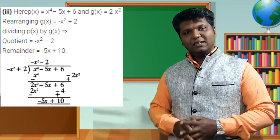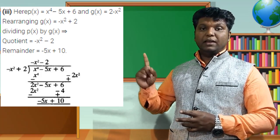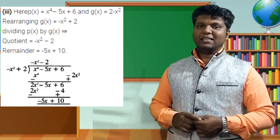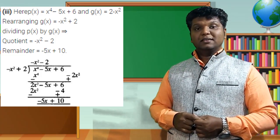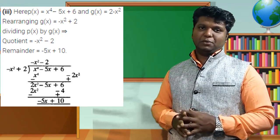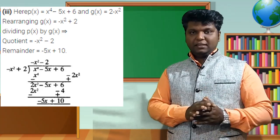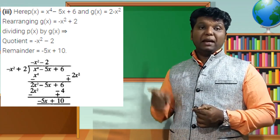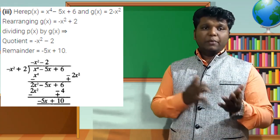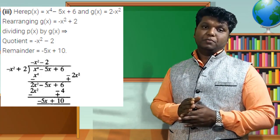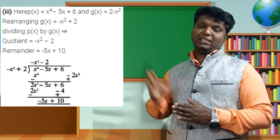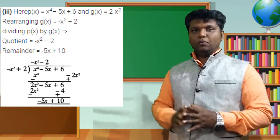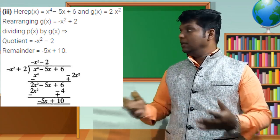Start dividing: x⁴ ÷ (−x²) = −x². Place −x² in the quotient. Multiply −x² by the divisor: −x² × (−x²) = +x⁴, −x² × 0x = 0x³, −x² × 2 = −2x². Subtract: x⁴ − x⁴ = 0; 0x³ − 0x³ = 0; 0x² − (−2x²) = +2x².